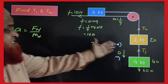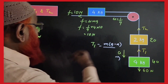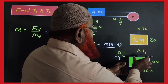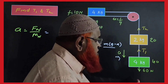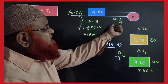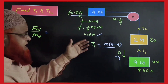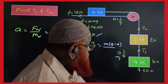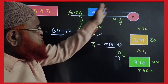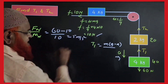My dear friends, in this question T1 and T2 are asked. Find acceleration first: net force by net mass. 40N and 20N and 16N act downwards. Friction equals μMG, with μ = 1/4, so μMG means 10N acting to the left. Net force: 16N minus 10N by net mass 4 plus 2 plus 4 which is 10. Acceleration is 5 m/s².